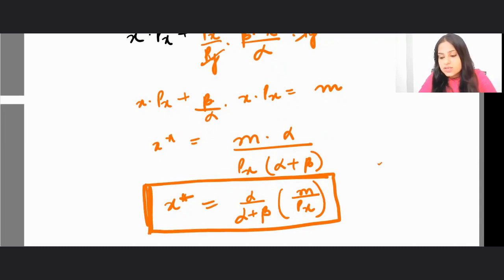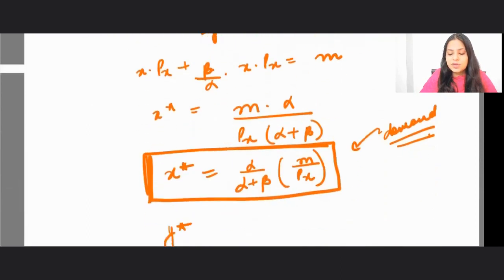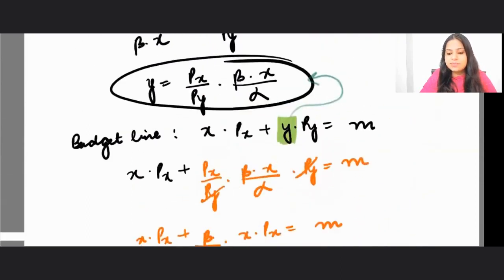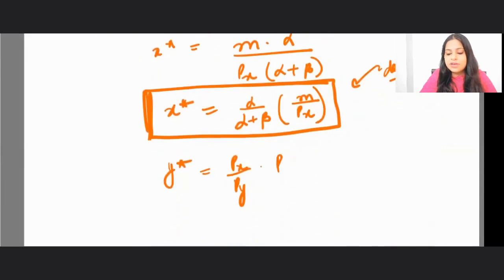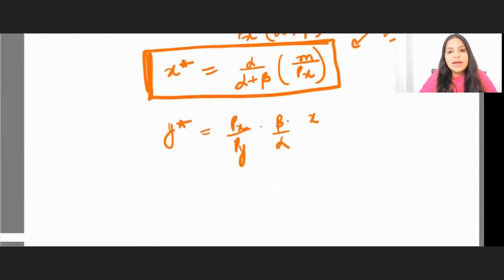Now you can also put it in y star. So you know that your y star is equal to px by py, beta times x over alpha. And once you solve for this, you will get px by py, beta by alpha.